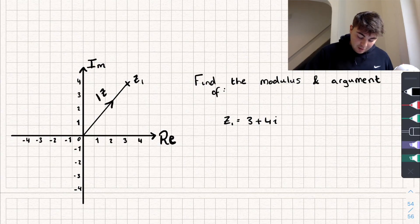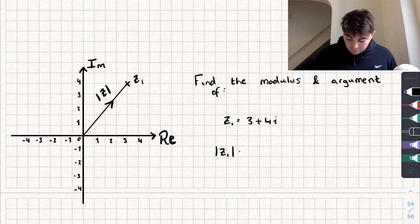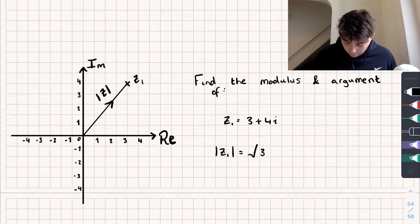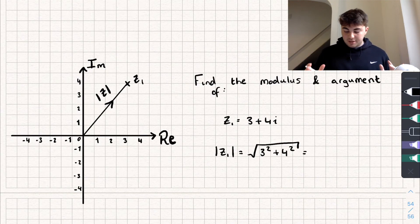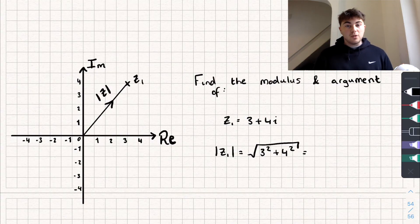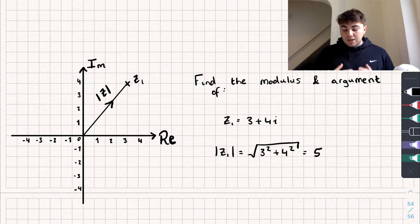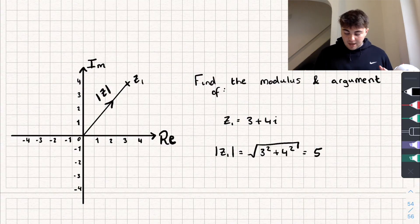The length of this vector is the modulus of my complex number. So the modulus of z1 is going to be given by the square root of 3 squared plus 4 squared. The square root of 3 squared plus 4 squared is the same as the square root of 25, and so our modulus is 5. We take the positive root because we're dealing with a size or a length.